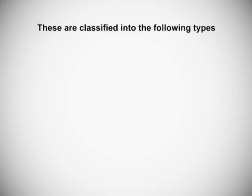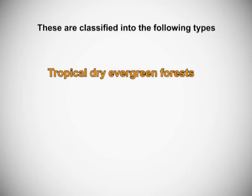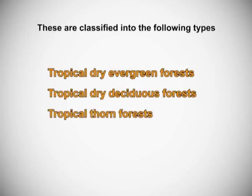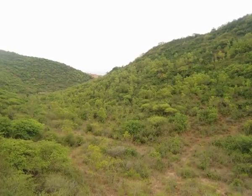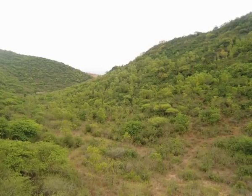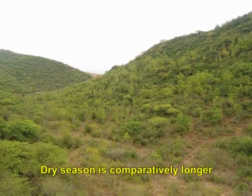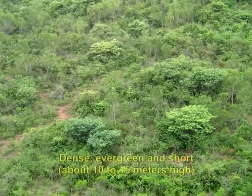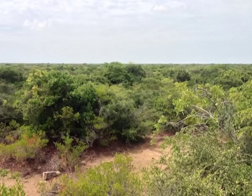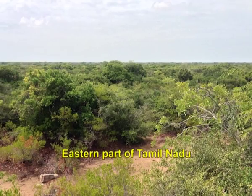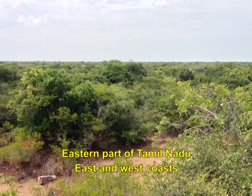Tropical dry forests are classified into the following types: tropical dry evergreen forests, tropical dry deciduous forests, and tropical thorn forests. Tropical dry evergreen forests are found in areas where rainfall is in plenty but the dry season is comparatively longer. The trees are dense, evergreen, and short — about 10 to 15 meters high. These forests are found in eastern parts of Tamil Nadu and along east and west coasts.